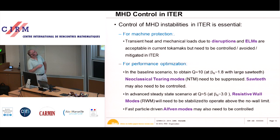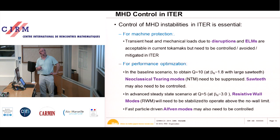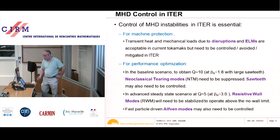There are two reasons for control: machine protection — disruptions can lead to very high heat loads and mechanical loads — and performance optimization. Neoclassical tearing modes will need to be controlled to achieve Q=10 plasmas. Control methods include avoiding dangerous limits, detecting instabilities and shutting the plasma down before they occur, or active intervention.